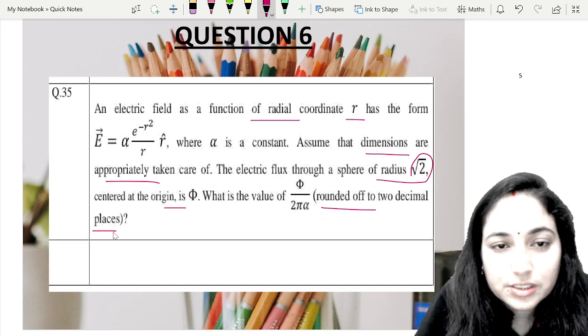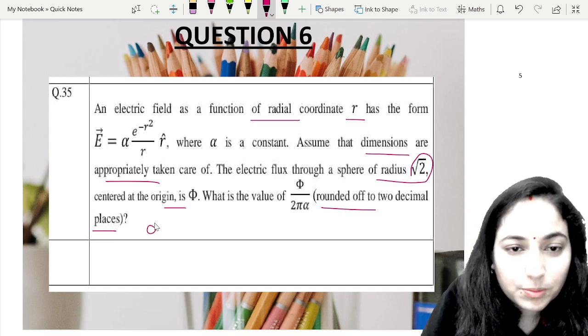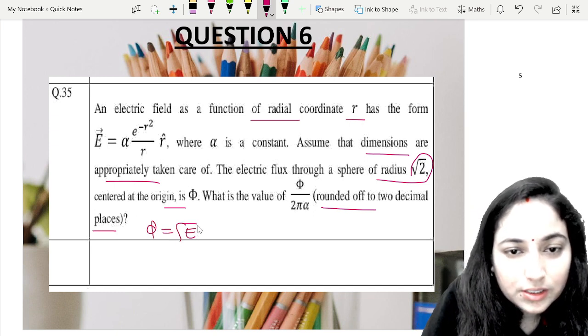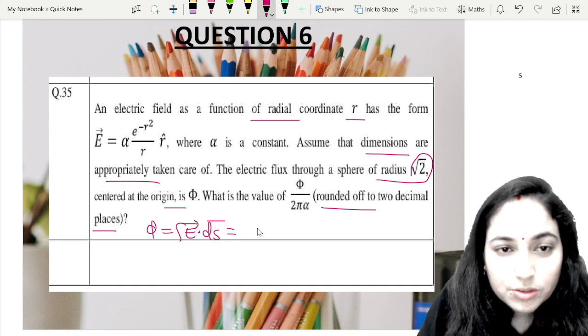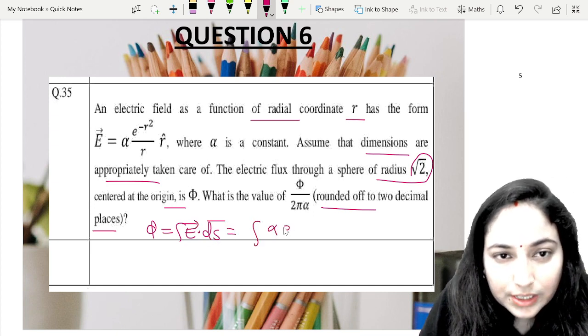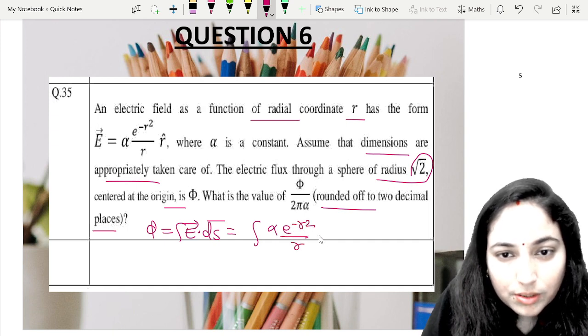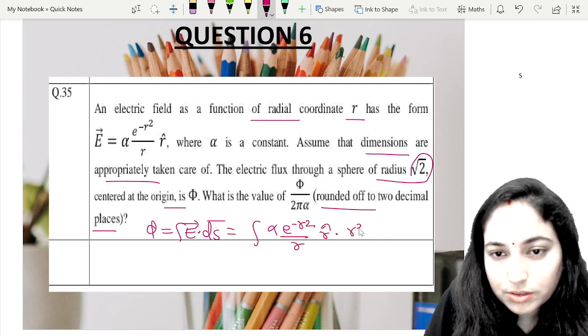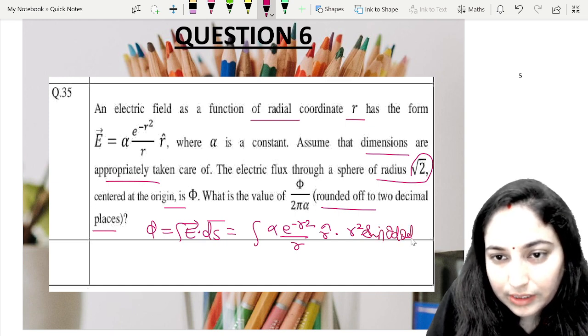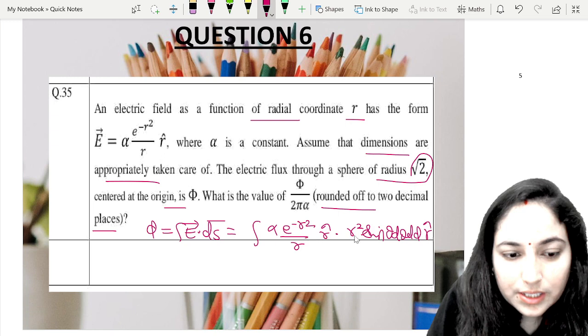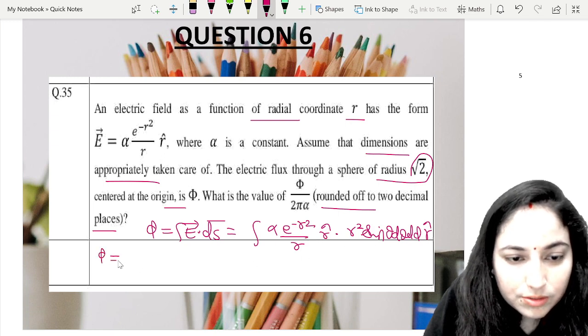Given electric field and flux, we write Φ equals integral of E dot dS. The electric field is in the r cap direction. So the flux value is alpha e to the power minus r squared over r, r cap, dot r squared sine theta dθ dφ r cap.